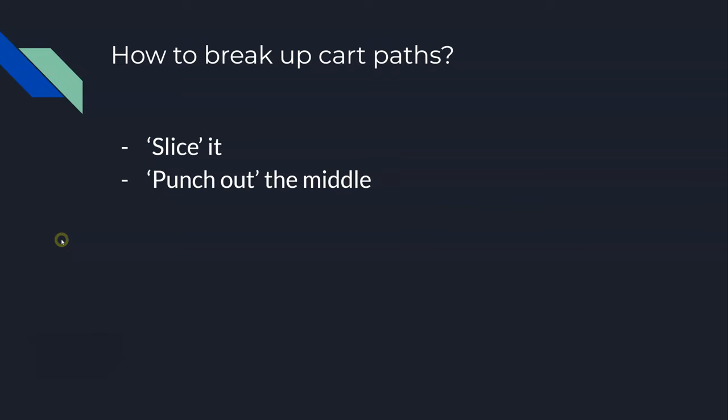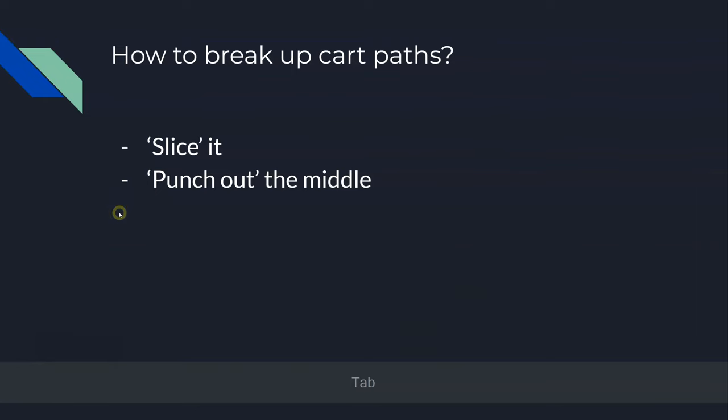There are two ways we can break up our cart paths. One is we can slice them — put a slice into the loop or cart path to divide it up. Another option is the punch out. Let's talk about the slice first.